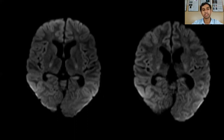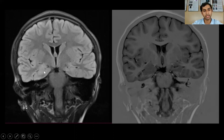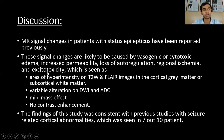Therefore, these findings suggest that these signal changes are only transient. This is another case of a 12-year-old male patient who shows that the hippocampus is mildly bulky on the right side, with asymmetry between the two hippocampi.